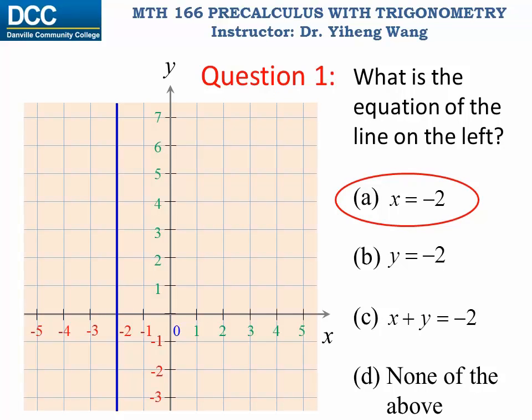If you recall, the graph of the equation is the collection of all the solution points of the equation. If you look at this vertical line, every point on it has the x coordinate of negative two, therefore automatically satisfies this equation, x equals to negative two. The y coordinate can be any real number and it won't matter.